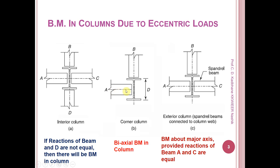But in the case of a corner column — looking at the I-section top view — one beam connects in one direction and another beam in another direction. Due to the reaction of a beam transferred to the column, there is a bending moment about the Z axis. Whenever reaction A is transferred to the column, there is a bending moment about the minor axis. If reactions from A and C beams are equal, there is no bending moment about the minor axis, but if only one beam comes from direction B, then only reaction RB acts, so the column is subjected to bending moment about the major axis Z axis.